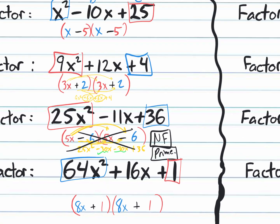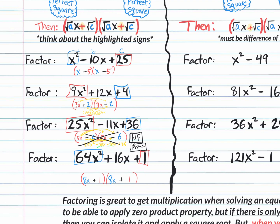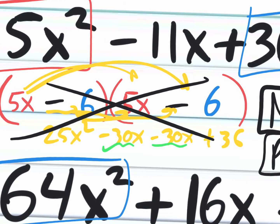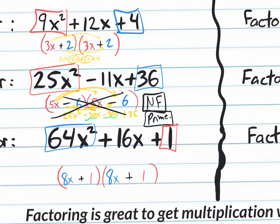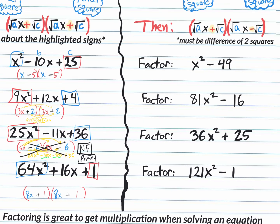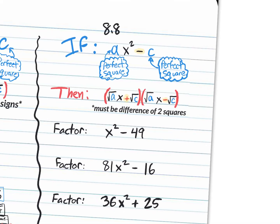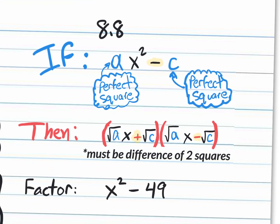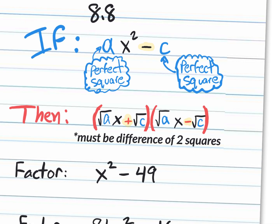To be honest, with perfect square quadratic trinomials you do need to verify — we just saw a case where it didn't work out. But when you have a perfect square binomial — a difference of two perfect square terms — it will always work and you don't have to verify. However, if you have a plus sign, it won't work. It has to be a minus.